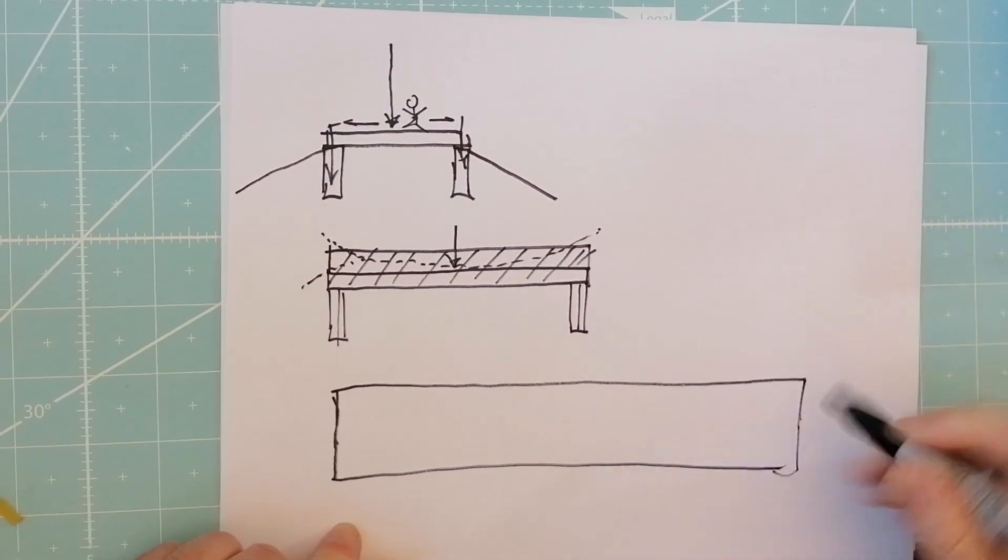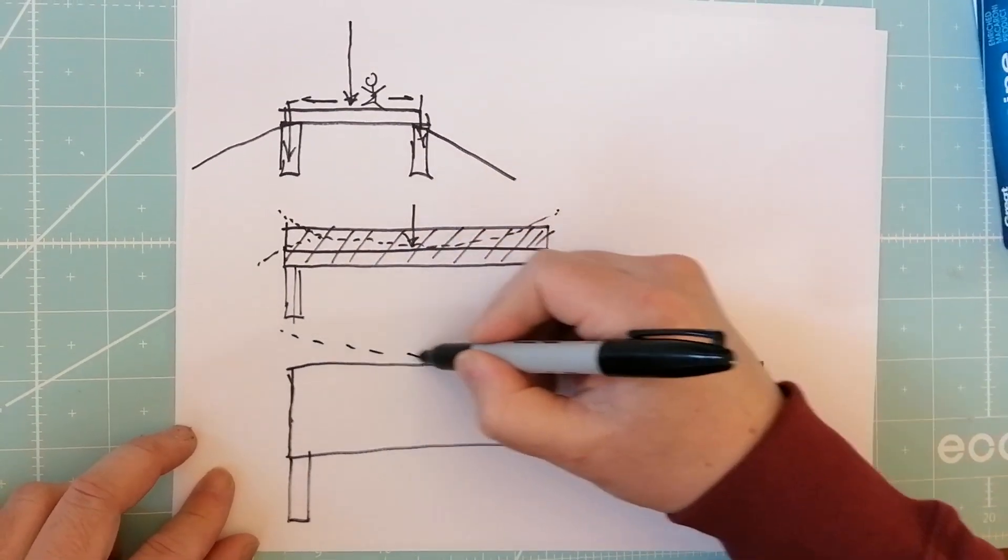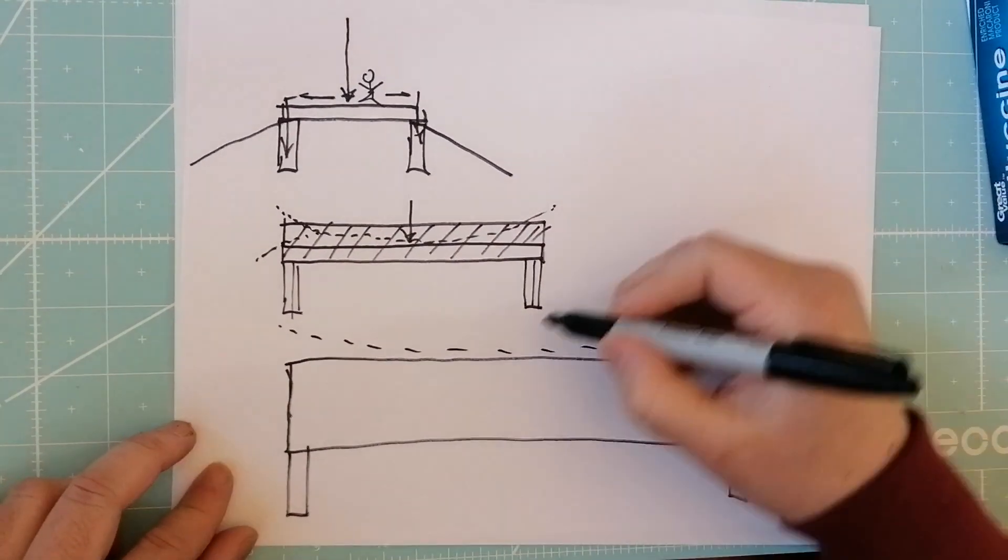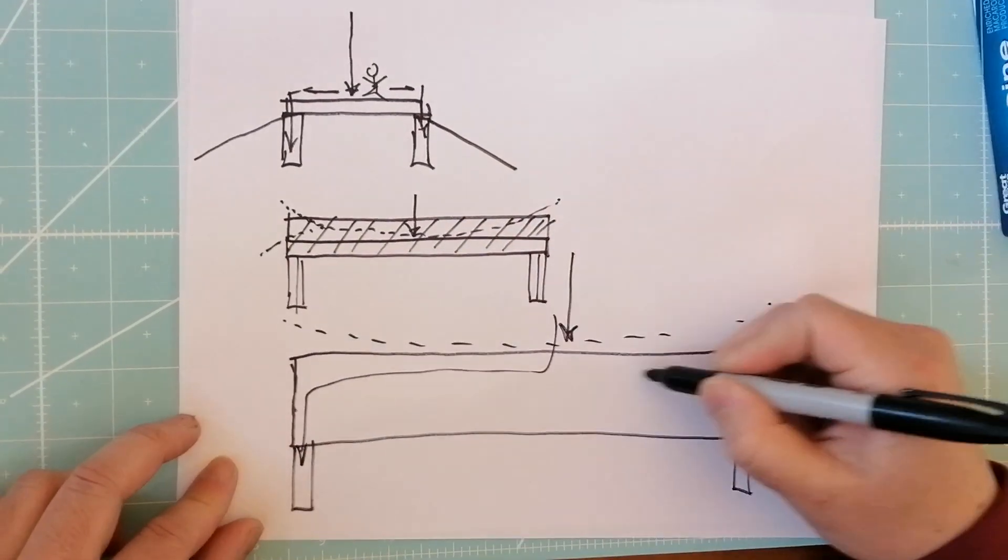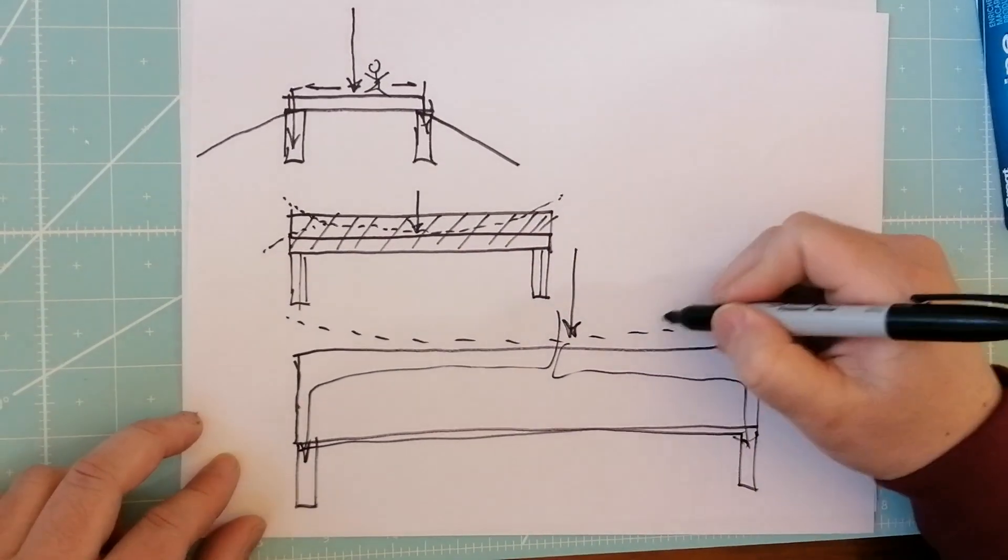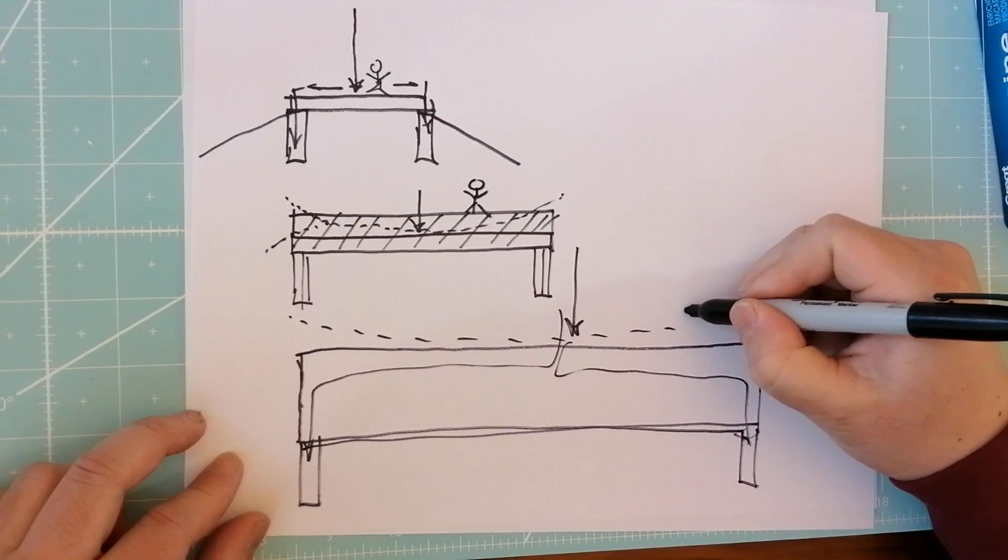So the idea is that all of this load eventually gets transferred by the beam across and down. But let's say the person is here and then the person is here, this is two persons, 12 feet, very big beam.